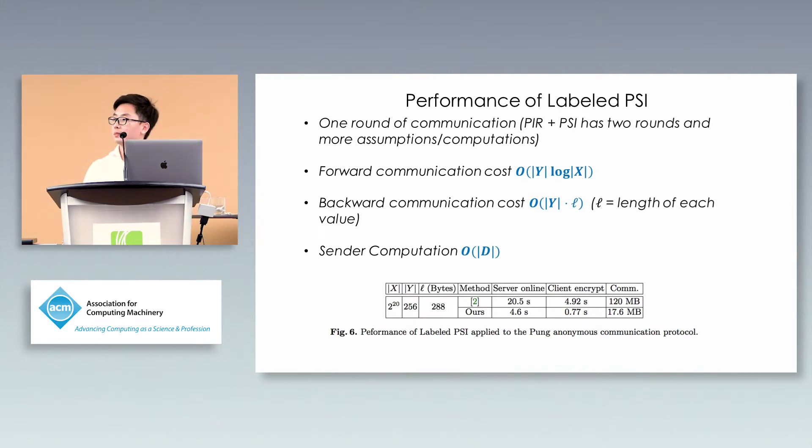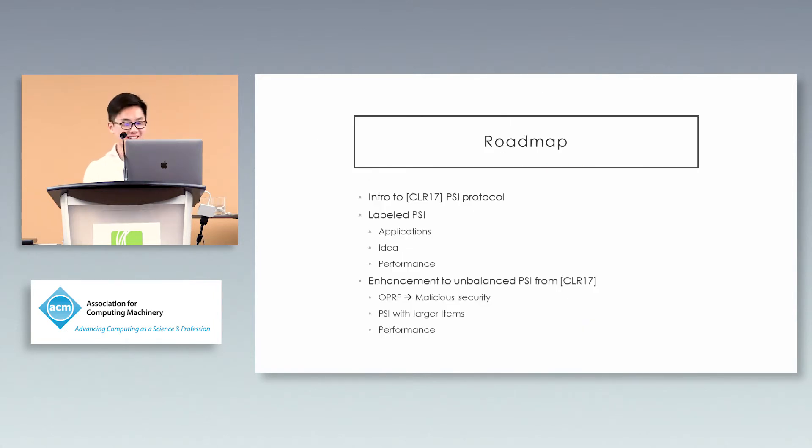We applied this label PSI construction. We implemented and applied it to an anonymous communication protocol called PUN. In one of the subroutines of PUN, each client needs to do PIR by keyword, achieved by our label PSI. Previously, we reduced PIR by keyword to PIR, but had to do multiple rounds. Now this is just one round. From the table, we're much faster with smaller communication.